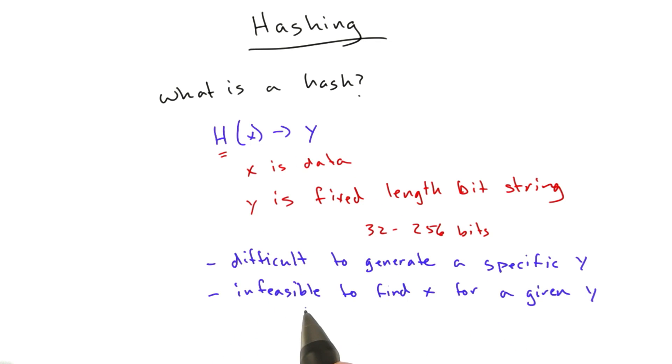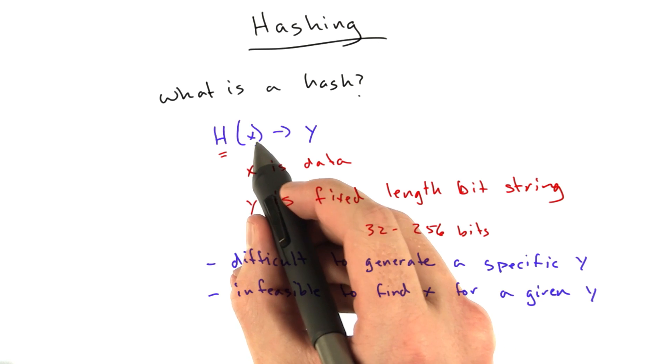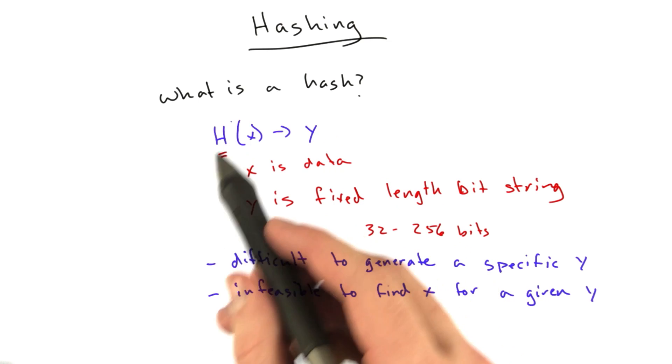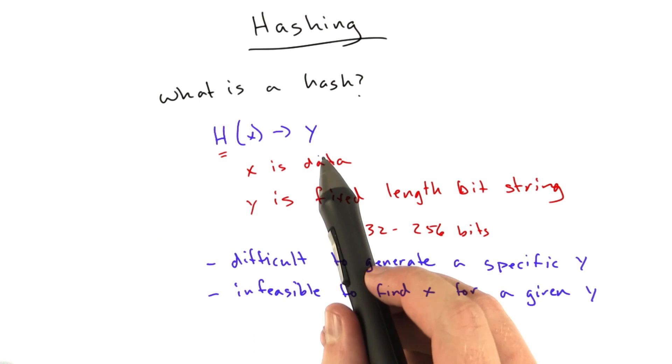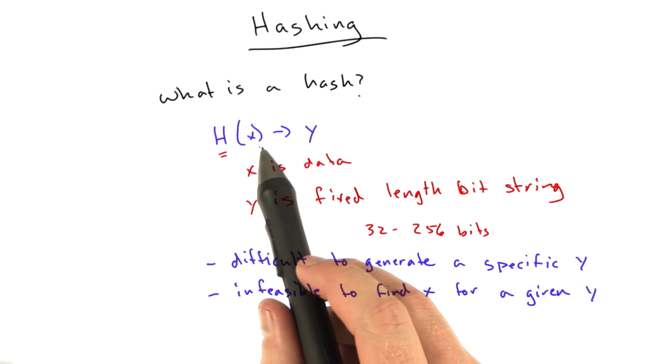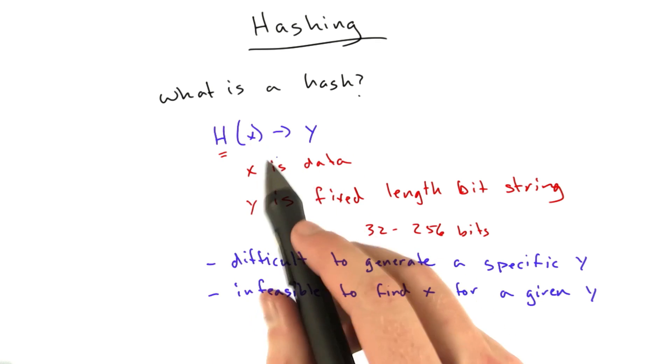Likewise, it should be infeasible, practically impossible, to find a particular input x for a particular output y. So if we hash some value into some other value y, we take that other value y and we cannot reverse this. This means it's a one-way function.